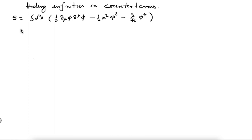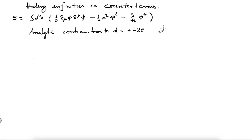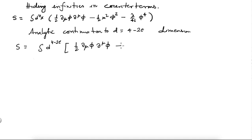Because we have divergences — because our integrals were not defined in 4 dimensions — we decided to do analytic continuation to d dimensions, which we are taking to be 4 minus 2ε dimensions. The action with which we will work is in 4 minus 2ε dimensions: one-half ∂_μφ ∂^μφ minus one-half m²φ² minus λ over 4! times μ^{2ε} φ⁴. The reason we have μ^{2ε} here is because the coupling constant becomes dimensionful as you go to d dimensions.